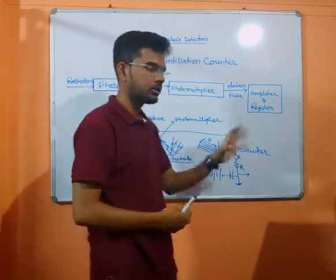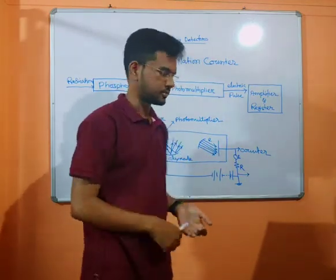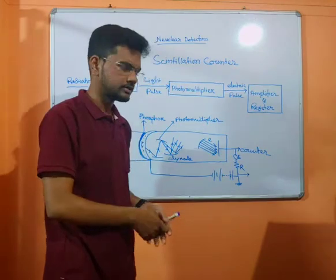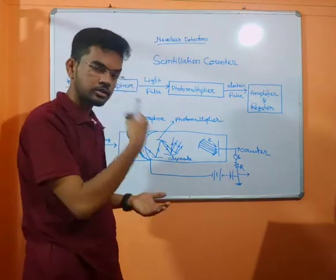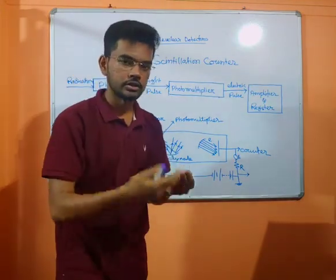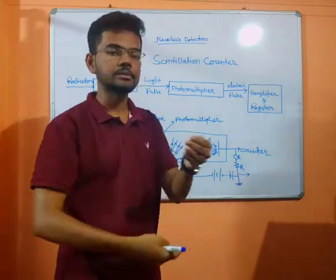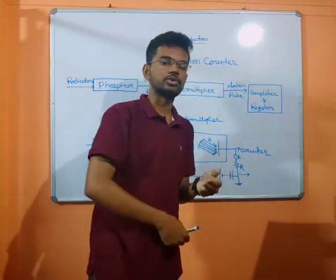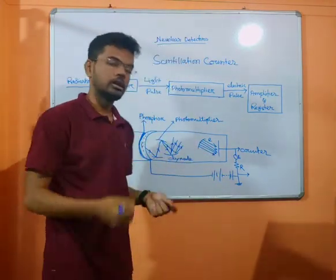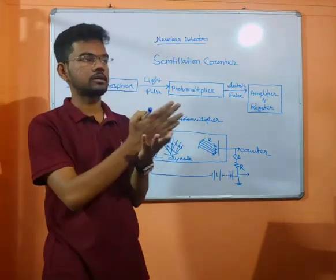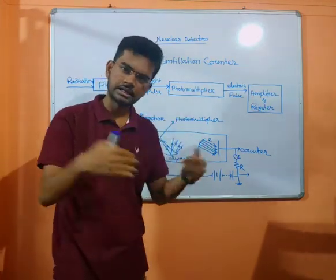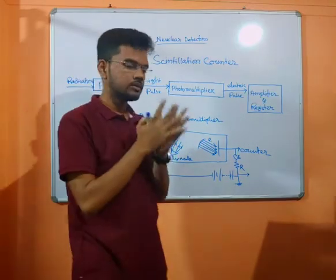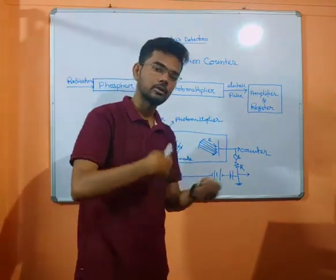With the plate connected, we can count and register the nuclear particle information. The X-ray incident on phosphor produces a light impulse — called scintillation. Scintillation hits the cathode, electrons are produced, and the light impulse is converted to an electric impulse by the photomultiplier. The electric impulse is then brought to the dynode.